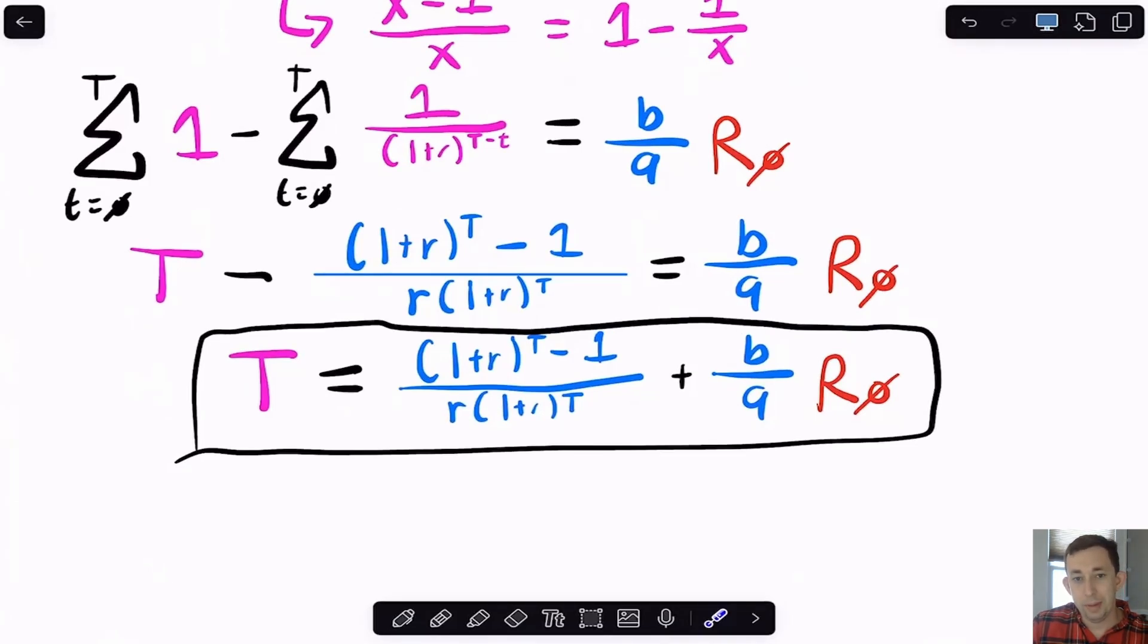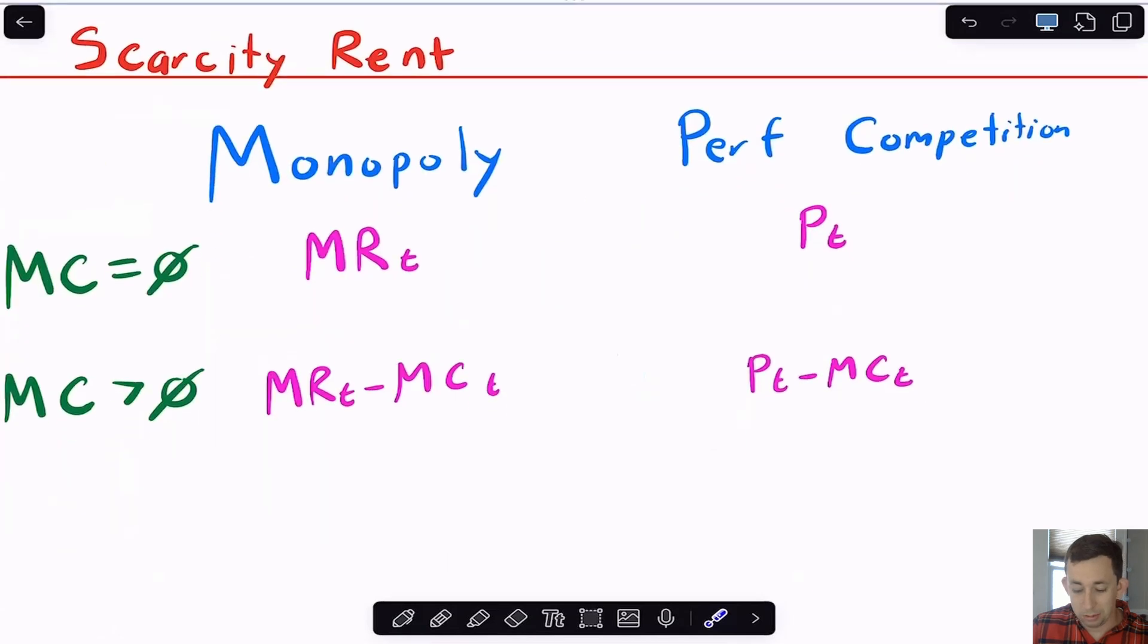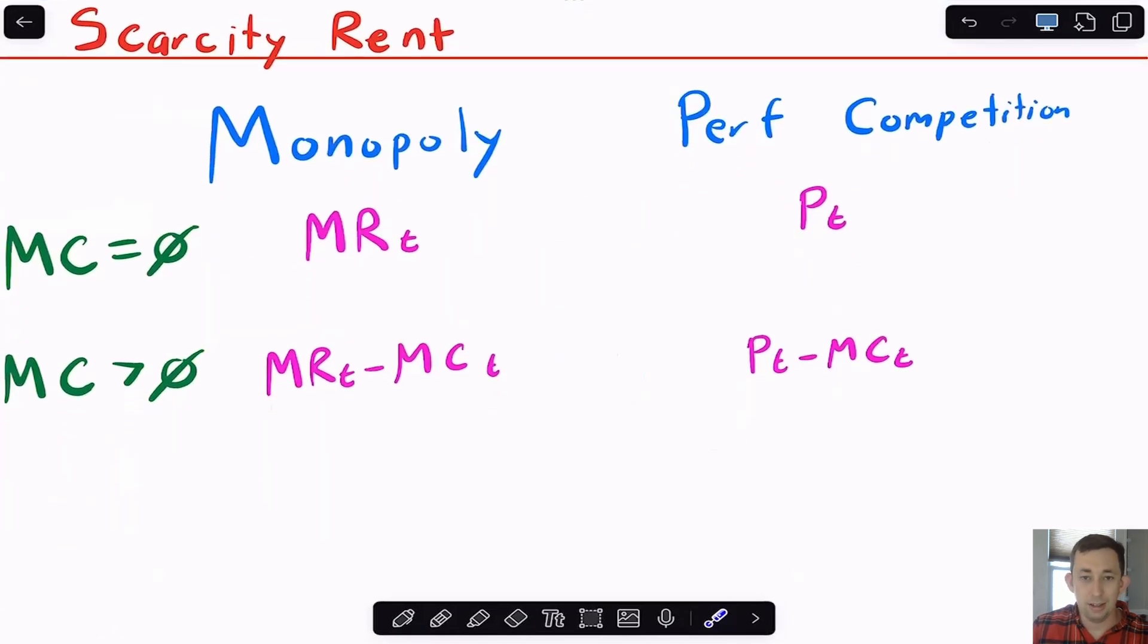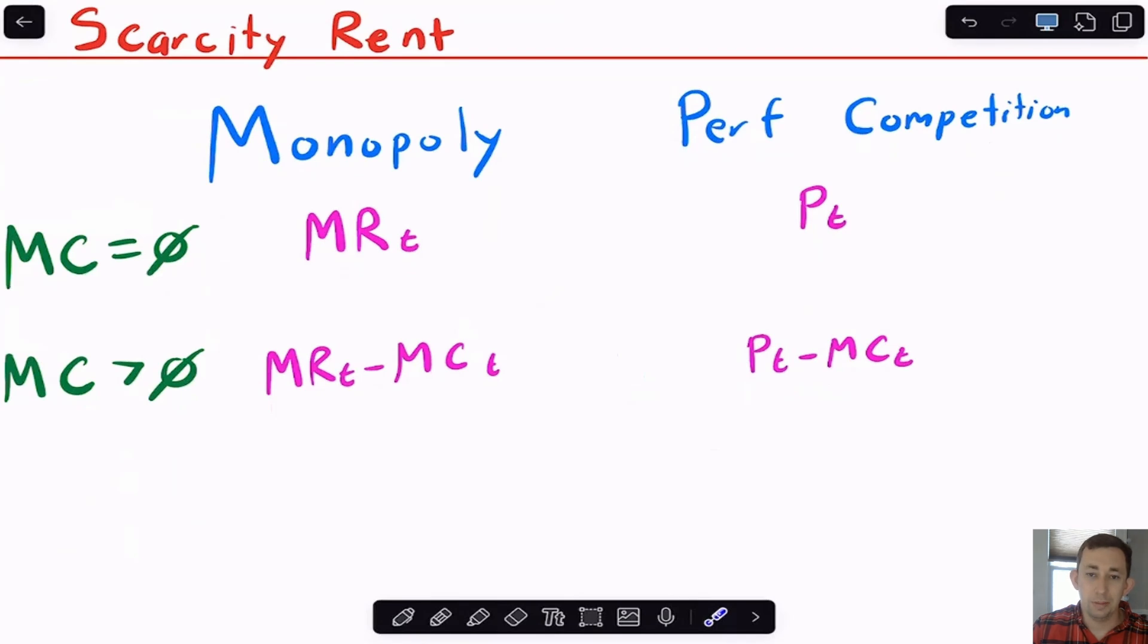And so again, just the basic idea of the Hoteling rule again, is that scarcity rent is going to go up at the interest rate. And so whatever your cost structure, whatever your market structure is, you can use to determine what your scarcity rent is. You can do a maximization problem with some math to figure out PTs and the QTs and how big cap T is. You can plug that into something like Excel solver, and then it'll tell you the answer.